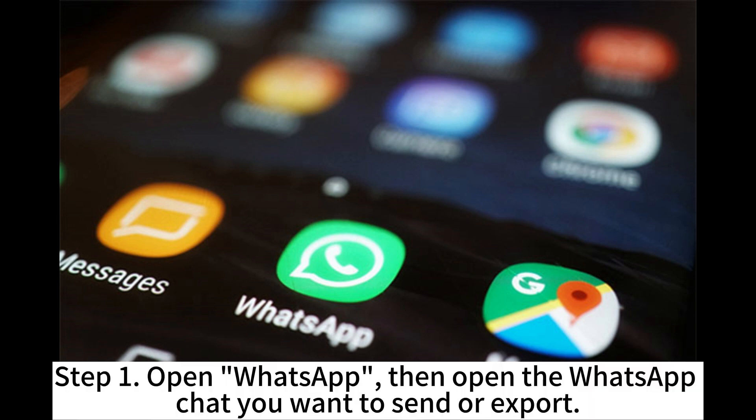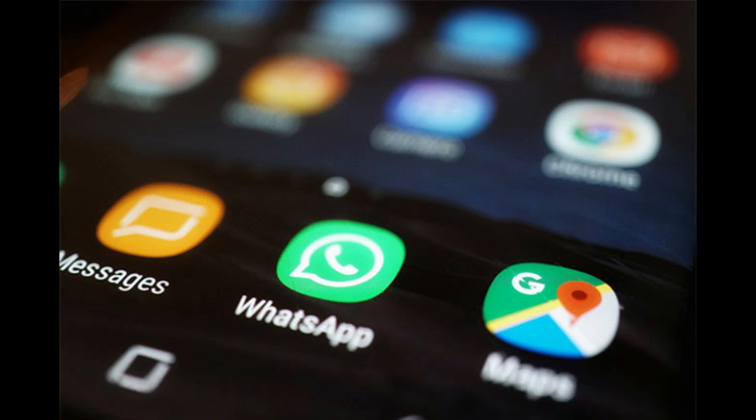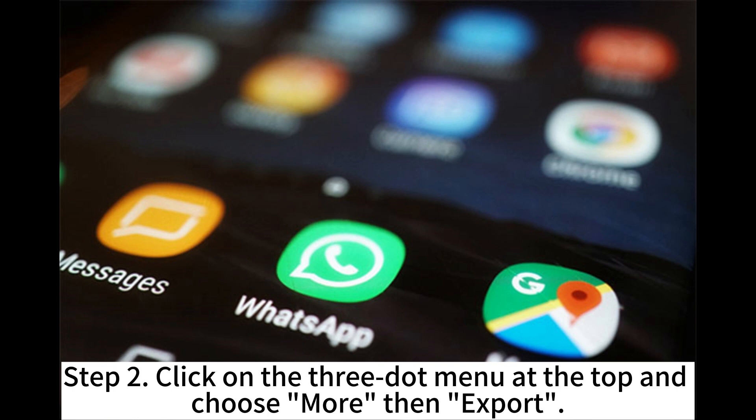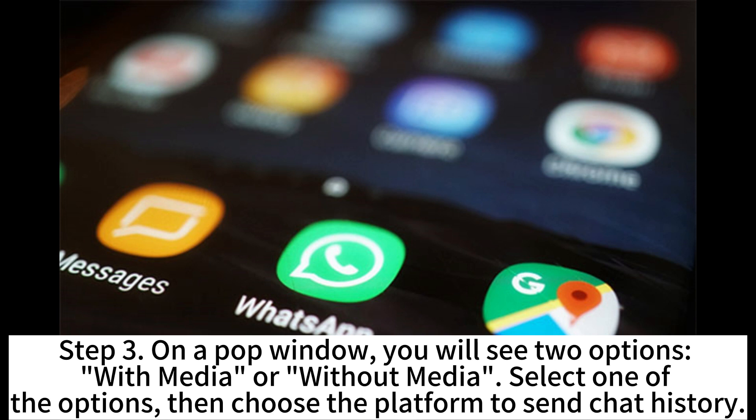Step 1: Open WhatsApp, then open the WhatsApp chat you want to export. Step 2: Click on the three-dot menu at the top and choose More, then Export. Step 3: On the pop-up window, you will see two options — with media or without media. Select one of the options, then choose the platform to send the chat history.